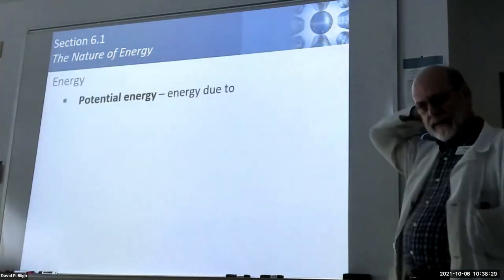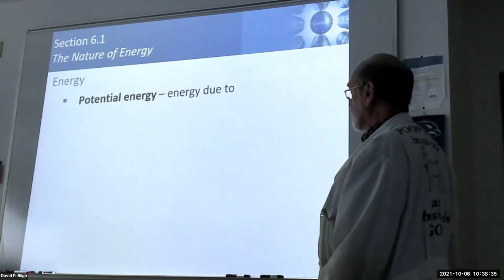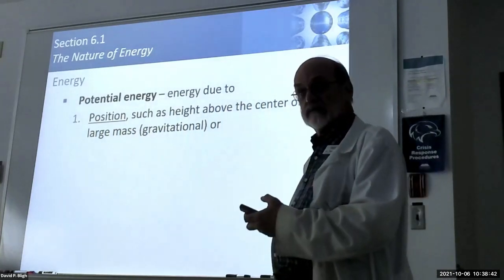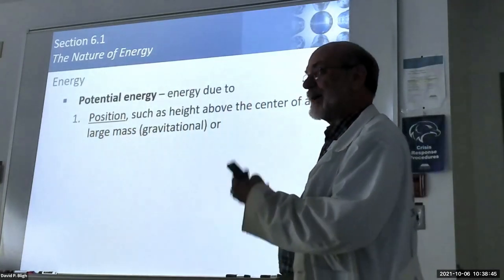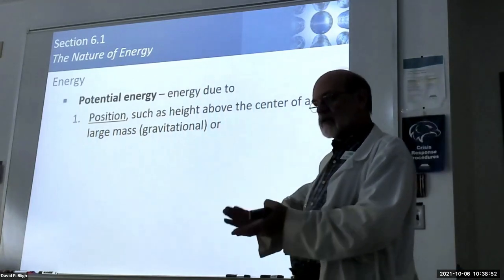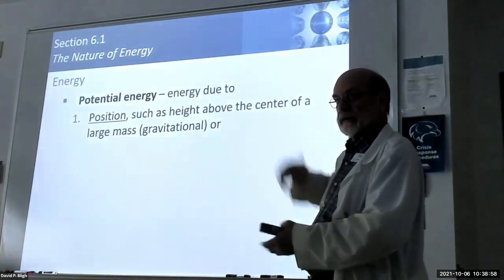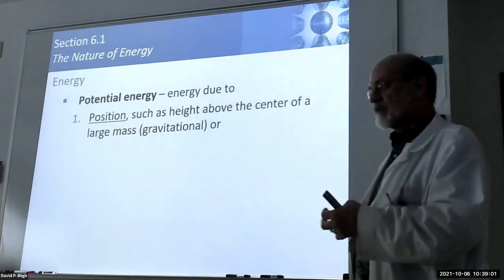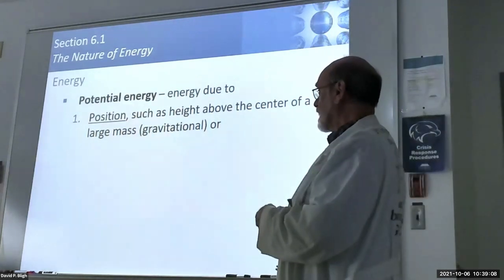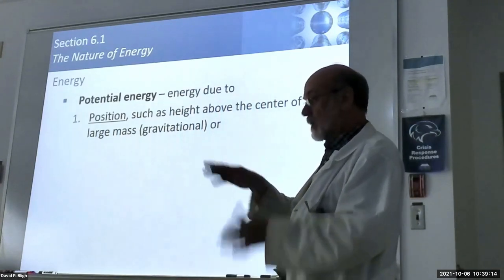We can subdivide energy into two forms: potential energy and kinetic energy. Potential energy can occur in several different forms, the most common of which is positional potential energy - due to your height above the surface of the earth, or actually your height above the surface of any heavenly body. It takes energy to move you from one position to higher in that gravitational field.